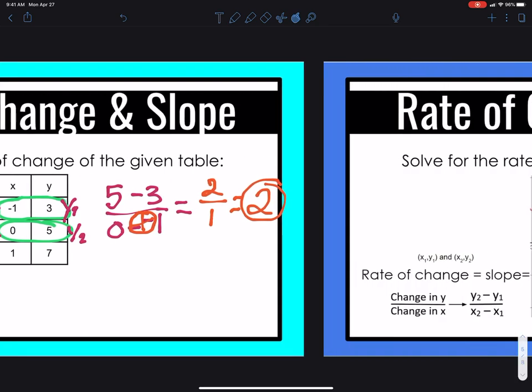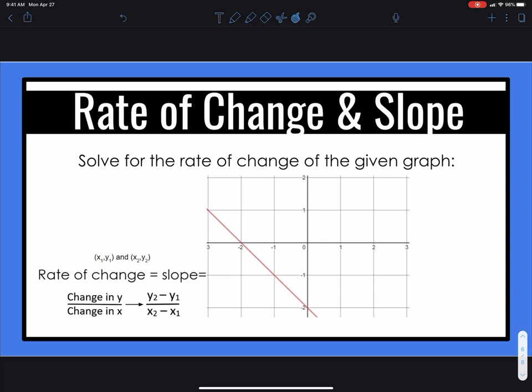Our next example is a graph. When solving for the rate of change of a graph, you can do two things. You can do like we did before with the table and a coordinate point. Identify your two points. So I can take this point and this point. I can label my x1, y1, x2, y2, and solve.